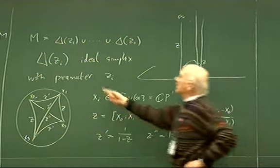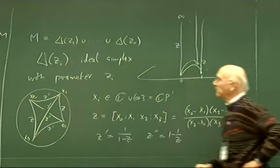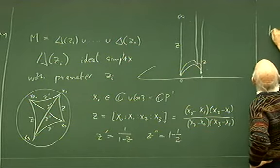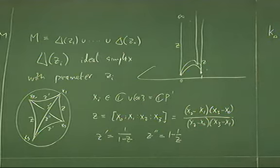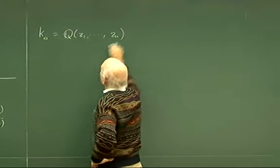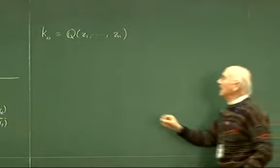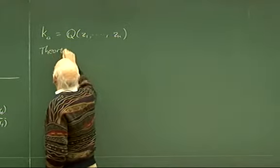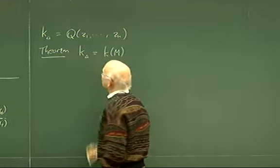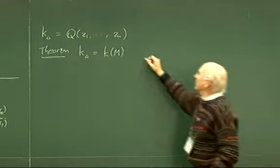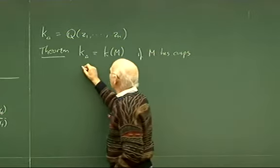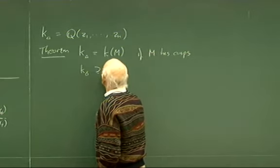We triangulate our manifold M using ideal simplices. We can then define a field — I'll call it the triangulation field K_Δ — which is simply the field generated by these simplex parameters. A nice computational theorem is that K_Δ is actually equal to the invariant trace field of M, so it doesn't depend on the triangulation, if M is non-compact, if M has cusps. In general, K_Δ contains K(M).